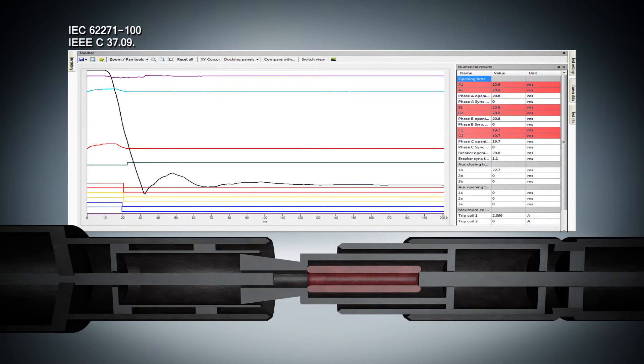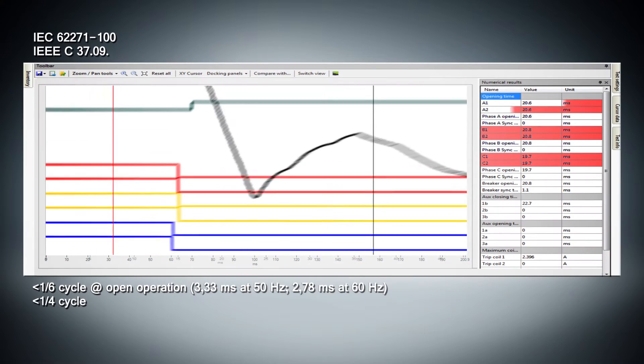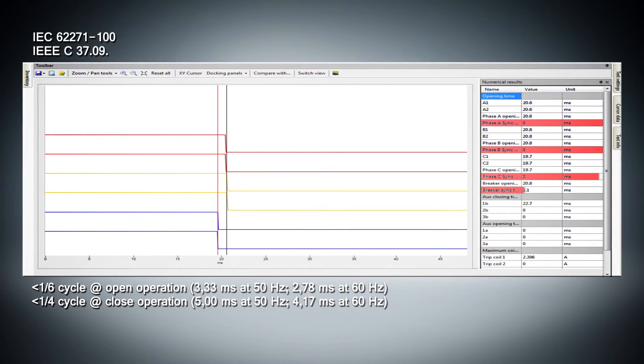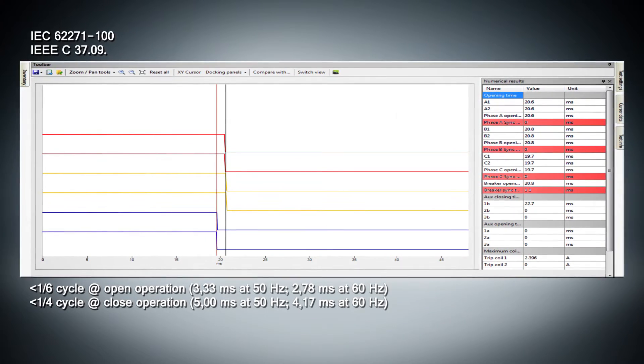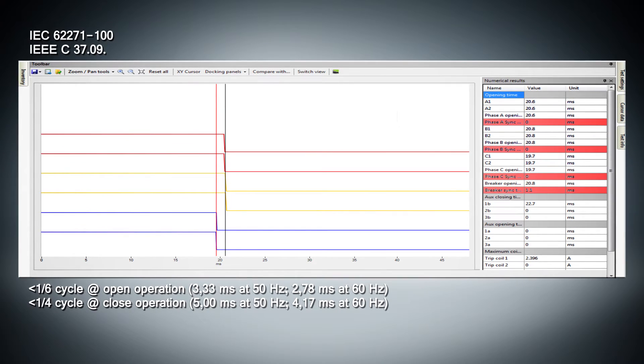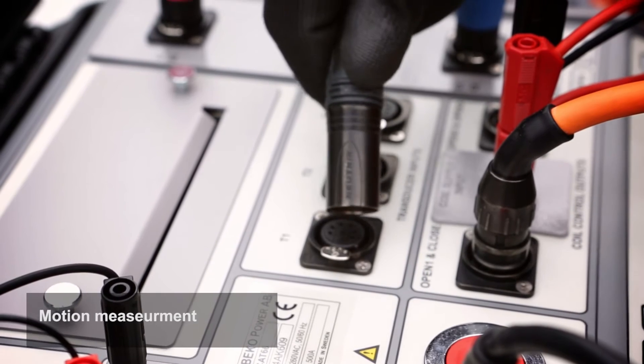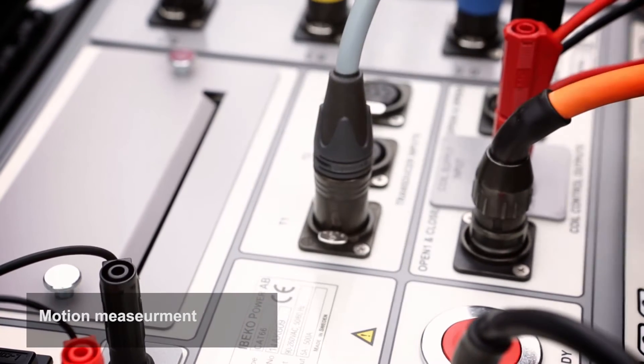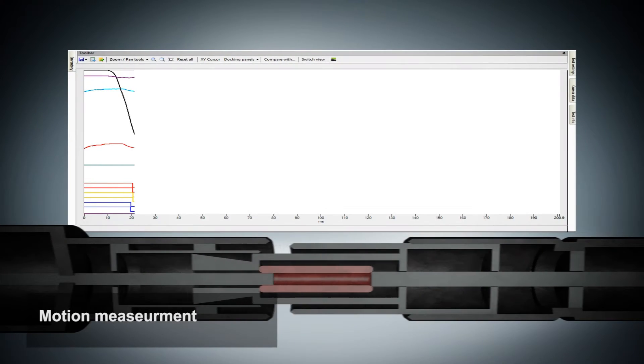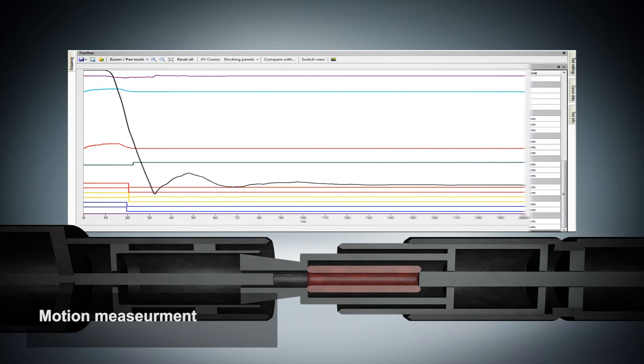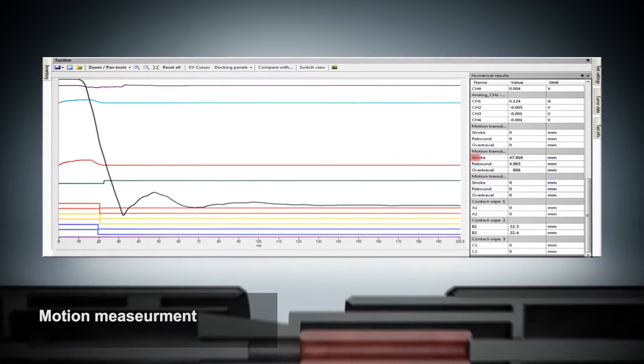Synchronization between the circuit breaker poles has to be within specified limits. Simultaneous measurements within a single phase are important in situations where a number of contacts are connected in series. The free transducer channels are intended for measuring displacement of the circuit breaker moving parts, contact wipe, over travel, rebounds, damping time and average velocity.